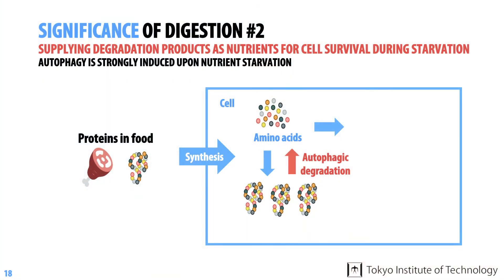The second example of the important roles of autophagy is its function as a response to starvation. Here we'll consider protein degradation as an example. Organisms, especially those living in nature, often encounter starvation conditions. During these circumstances, the levels of amino acids decrease, which results in the attenuation of protein synthesis.